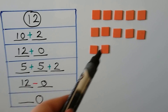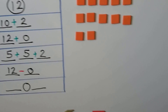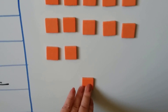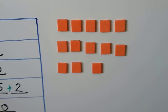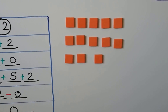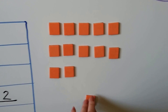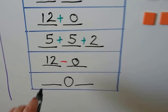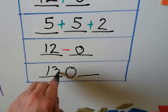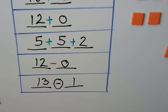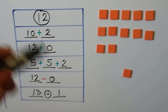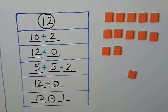Here we have 12 counters. If we put another counter here, that would be 13 counters. We could say 13 minus 1 is 12. We could write that subtraction sentence. And those are some of the ways that we can make 12.